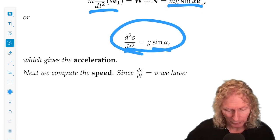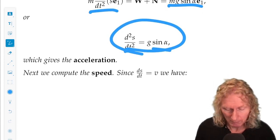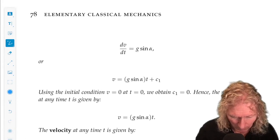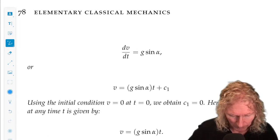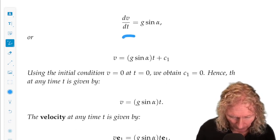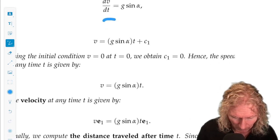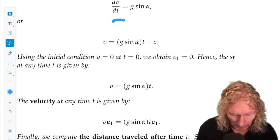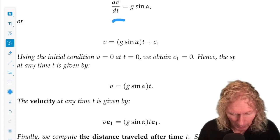Now, the speed would just be ds dt. We integrate this. dv dt is acceleration, ds dt. dv dt, the speed, we integrate it.